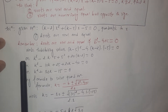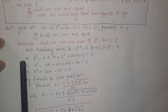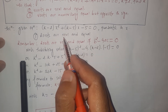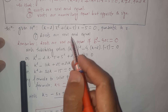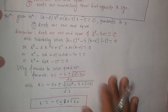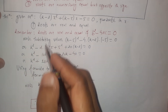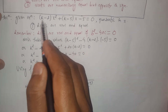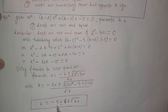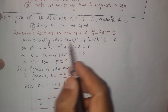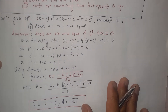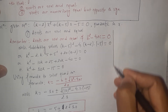So the value of k is minus 5 plus or minus 2√10. This is our solution for Case 1: we solved for k such that the given quadratic equation has real and equal roots. If the value of k is minus 5 plus or minus 2√10, then the roots of the quadratic equation will be real and equal. This is the final solution for Case 1.